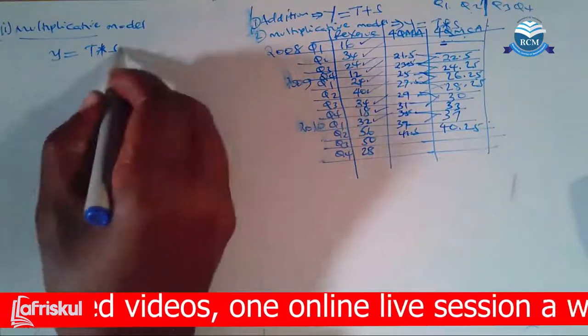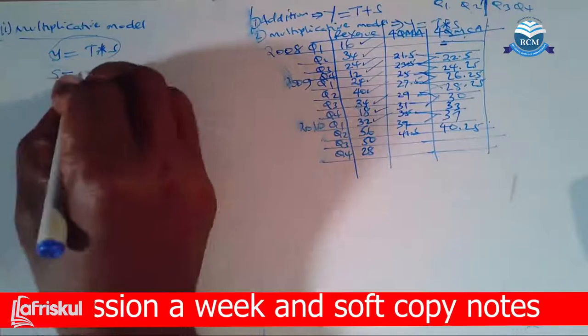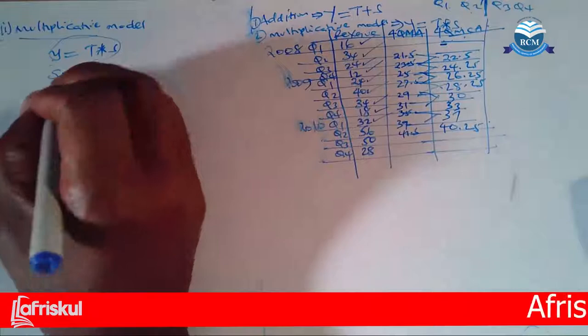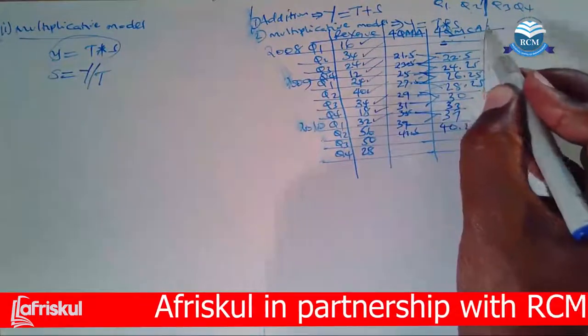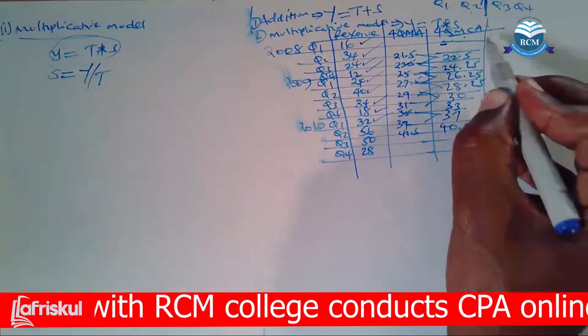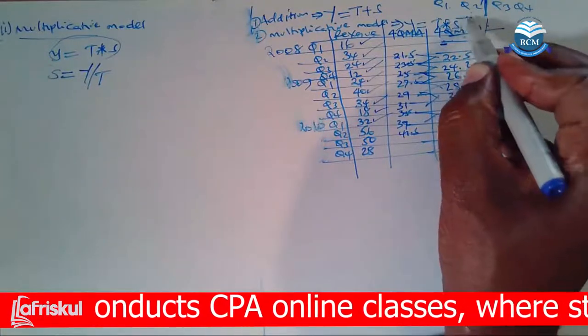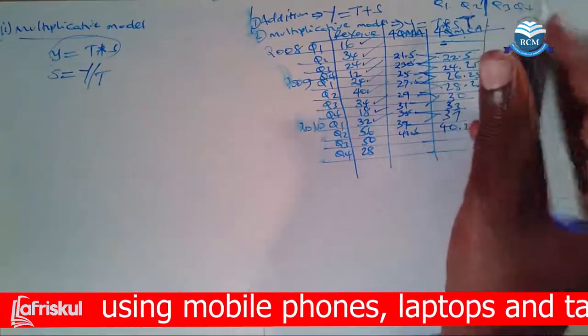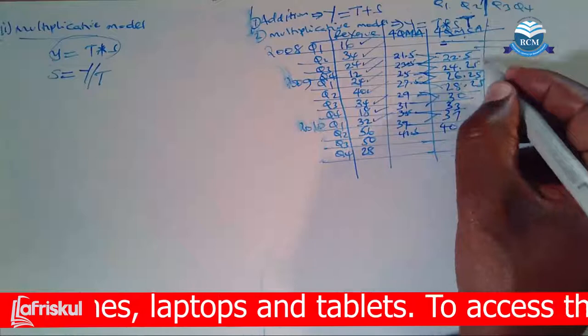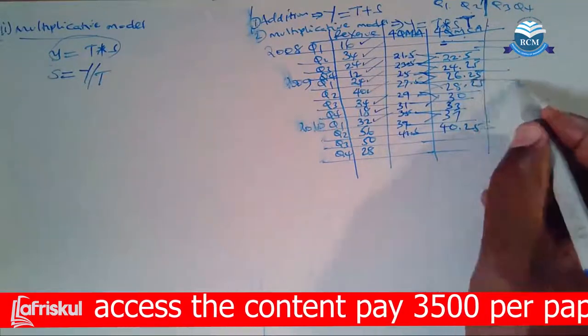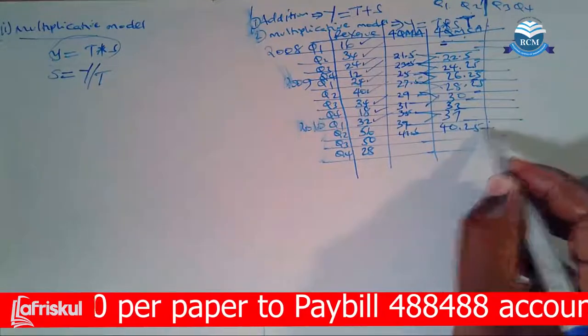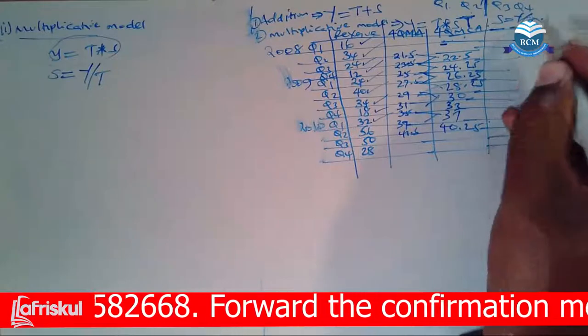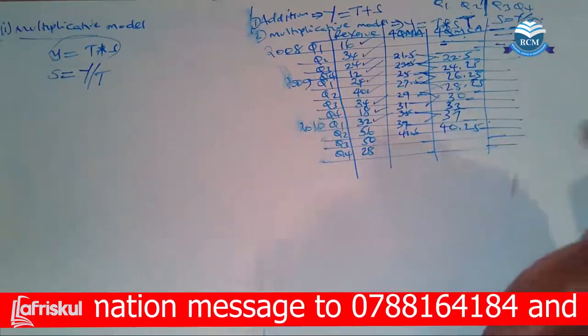Now, ladies and gentlemen, they want us first of all to give them the seasons. And for us to give them the seasons, seasons will be Y divided by the trend. These four quarter moving centered averages are the ones that we shall take as our trend. So this is a column of the trend.